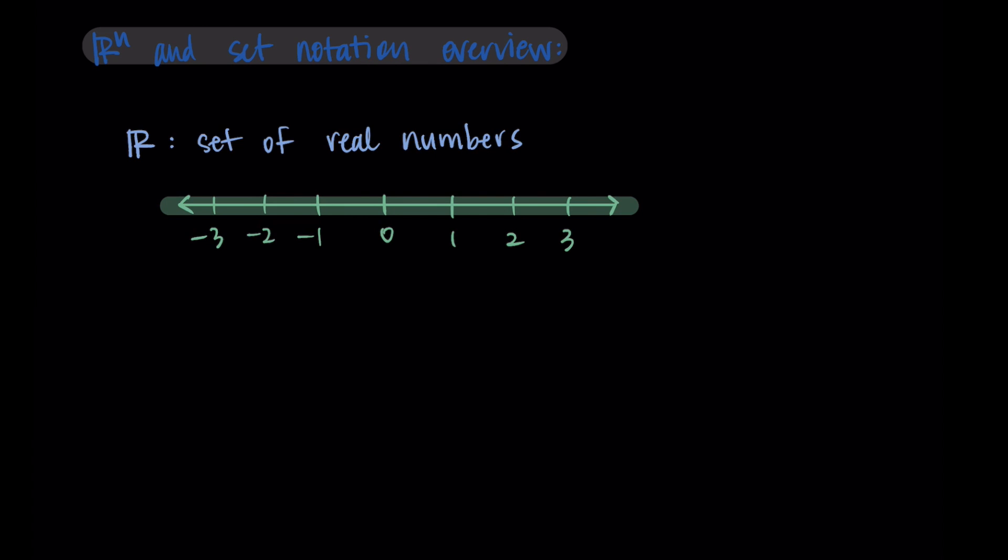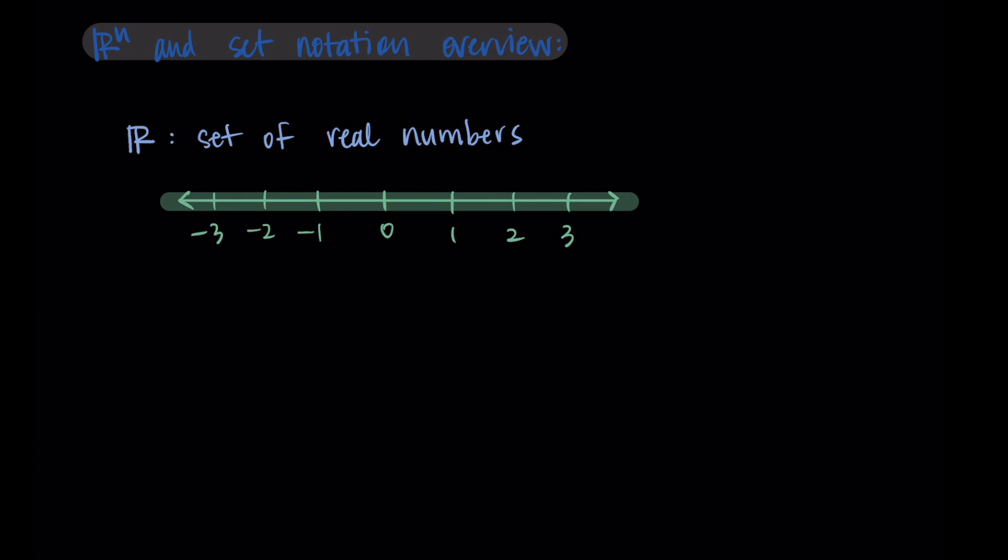So this also includes things like negative one half, e or pi, or you could think of 0.9 repeating. All of these are real numbers. So real numbers are everything that aren't complex or imaginary numbers. Real numbers are basically what we work with most of the time.